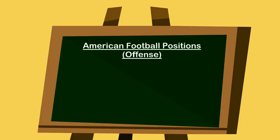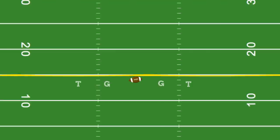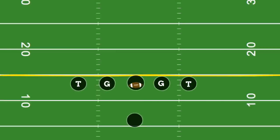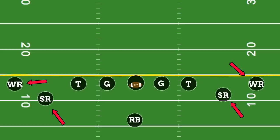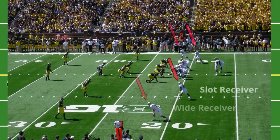Now let's transition to the wide receiver position. This position will be catching the football and gaining positive yards after the catch. There are two types of receivers coaches use: one being the wide receiver, the widest guy who can catch the football, and the other being the slot receiver — labeled SR here — meaning they're lined up in the slot position, in between the widest guy and the offensive line.